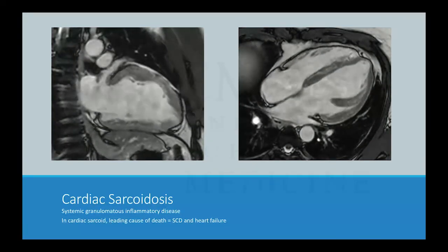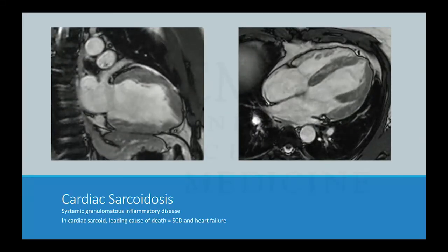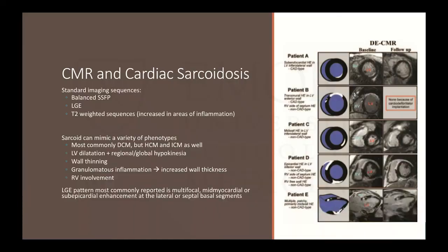Cardiac sarcoidosis is a systemic granulomatous inflammatory disease where the leading cause of death is sudden cardiac death and heart failure. We use Cine images, late gadolinium enhancement, and T2-weighted images — since inflammation causes edema that highlights T2 signal. Cardiac sarcoid can masquerade as many cardiomyopathies: subendocardial mimicking ischemia, transmural in a coronary distribution mimicking infarct, mid-myocardial, involving the RV, or patchy segments throughout. As a phenotype it's usually a dilated cardiomyopathy, but can look like hypertrophic or ischemic. The most common LGE pattern is multifocal, mid-myocardial or subepicardial enhancement, usually in the lateral or septal basal segments of the LV.